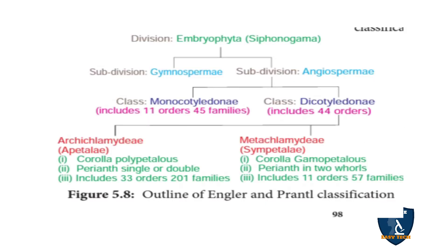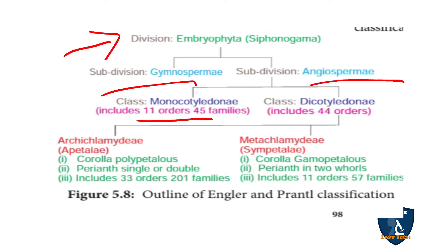According to this classification, embryophyta siphonogamy is subdivided into gymnospermy and angiospermy. The angiosperm is divided into class Monocotyledon and class Dicotyledon. Monocotyledon includes 11 orders and 45 families. Dicotyledon includes 44 orders and is further divided into Archichlamydeae (apetale) and Metachlamydeae (sympetale).